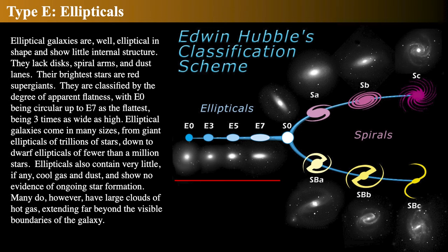Elliptical galaxies are elliptical in shape. They don't have any internal structure — no disks, no spiral arms, no dust lanes. The brightest stars are big red supergiants, and they're classified only by their appearance and apparent flatness. A circular-looking one is E0; one that's really wide and flat or cigar-shaped is E7, up to about three times as wide as it is high. Ellipticals range hugely in size, from trillions of stars down to tiny dwarfs with only a few million stars — smaller than some globular clusters. They contain no gas or dust and show no evidence of star formation, though they do tend to have large hot clouds of extraordinarily hot gas emitting X-rays that extend far beyond what you can see.